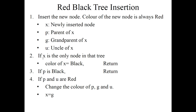After insertion, if X is the only node in the tree, we insert a new node with color red. Since it is a root node, in a red-black tree the root node must be black. So the node's color is changed to black. Insertion is completed.